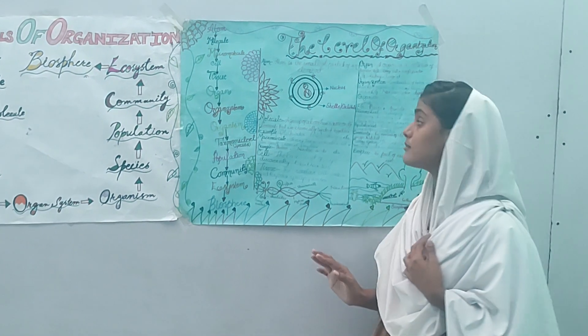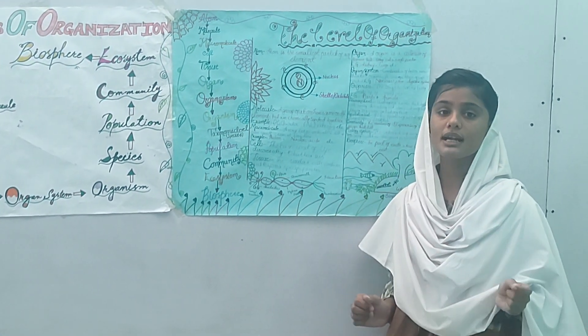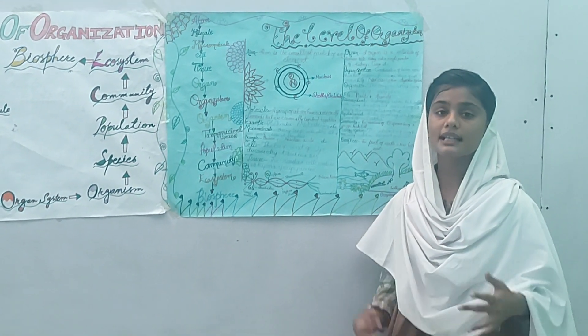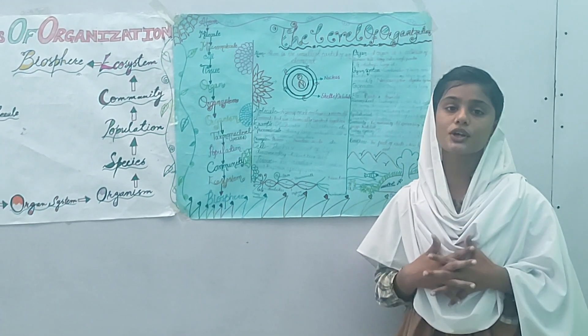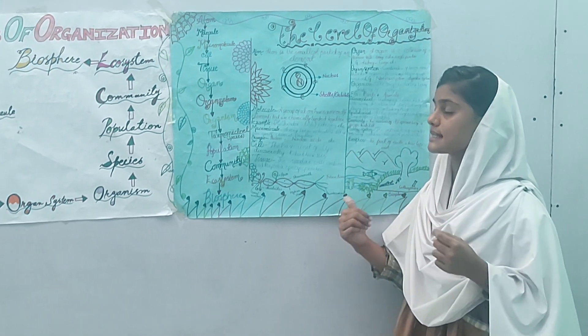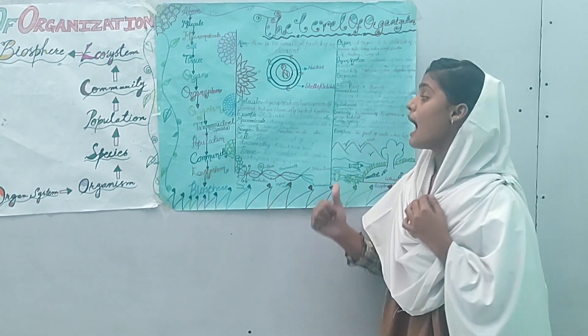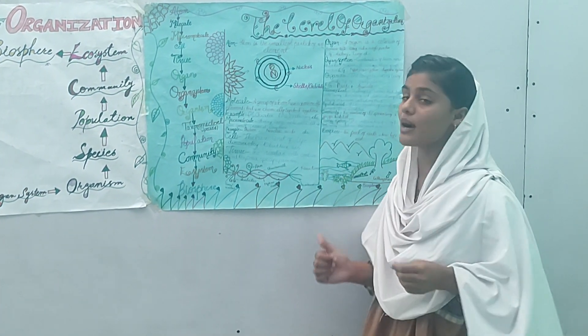Molecule: a group of atoms of the same or different elements that are chemically bonded together is called a molecule. Examples include H2O (water) and nitrogen, etc.